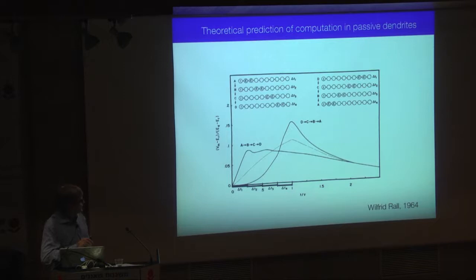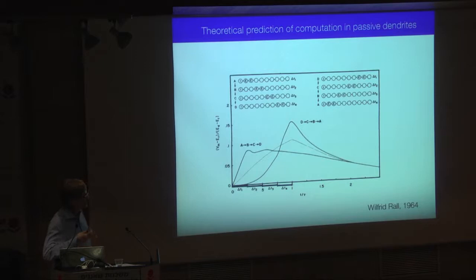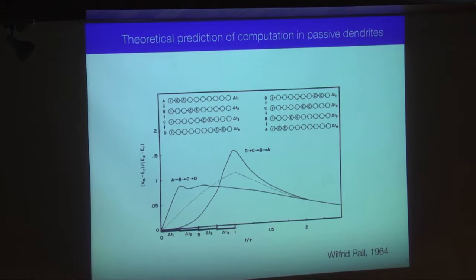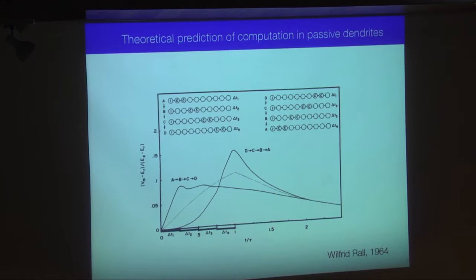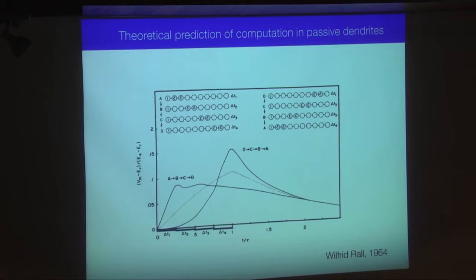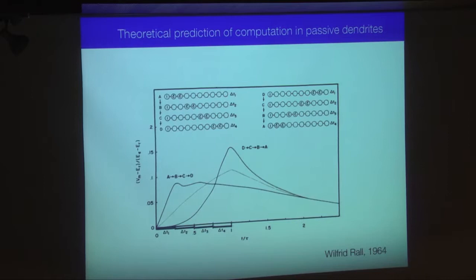This idea is not new. Starting from the magnificent theoretical work of Wilfrid Rall 50 years ago, we know that even passive linear cables can already implement some rudimentary computations of sequences that might be relevant to this kind of task. Here is the original figure from Rall's book chapter written in 1964, showing that a passive linear cable can differentially read out sequences of activation based on the differential filtering of individual EPSPs depending on their location.